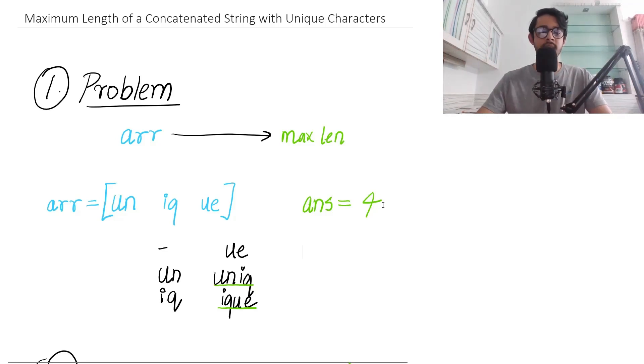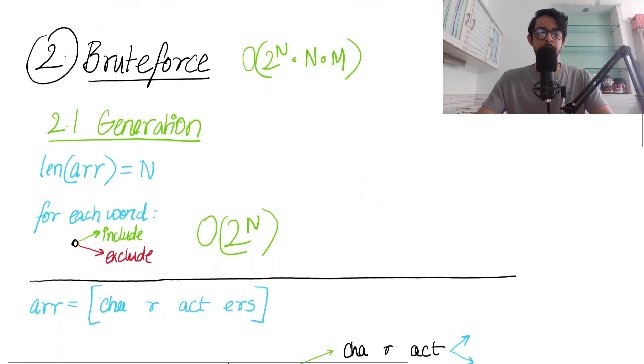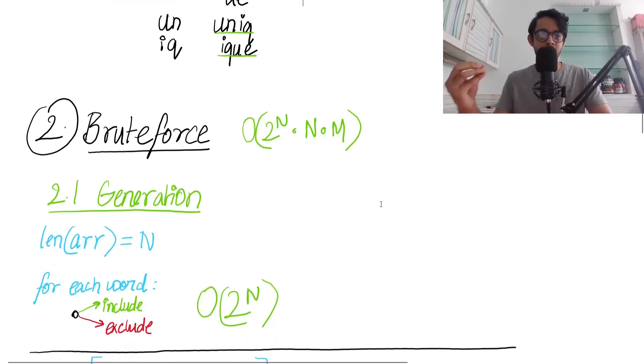The brute force is just formalizing what we discussed. Since the first step was enumerating all subsequences, let's do that. We look at the length of the array as N. For each word, I either include it or exclude it, which means there's a binary operation for every word, giving us O(2^N) complexity.